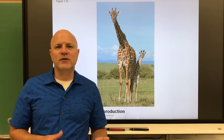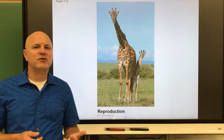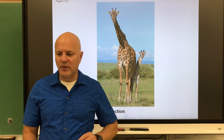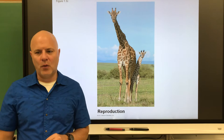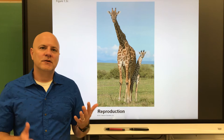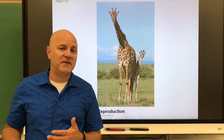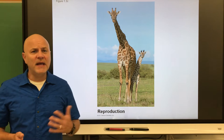All life reproduces, either through asexual reproduction or sexual reproduction. Asexual reproduction is the creation of offspring by a single parent without the participation of gametes — egg and sperm cells. If you're a single-celled organism, you divide into two single-celled organisms. The offspring are exactly like the parent — you're essentially making a copy. This is beneficial in a constant environment where your genetics work well.